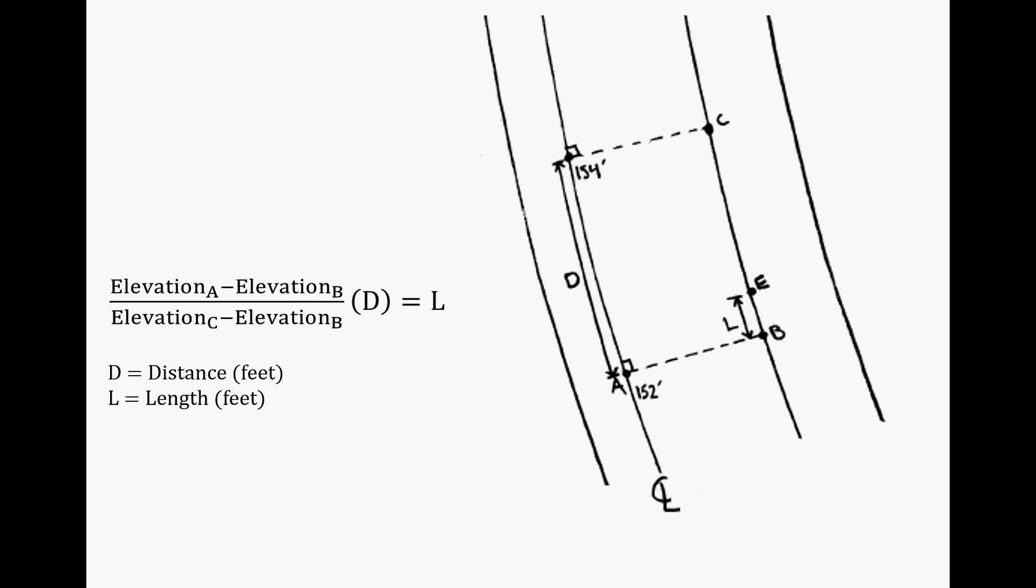C is our next point—the point perpendicular to our next interval in the elevation at 154 feet. D is the distance between our contours, so the distance between point A and our next interval at 154 feet. Ultimately, we're looking to establish where point E is. The connection between A and E will give us our contour line.